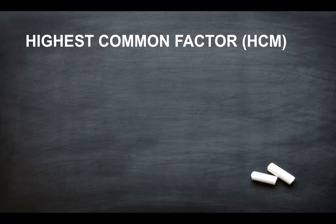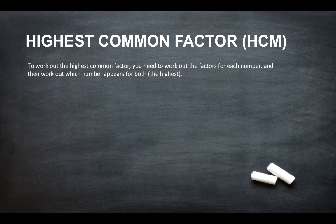So the highest common factor. So to work out the highest common factor you need to work out the factors for each number and then work out which number appears for both, i.e. the highest common factor.